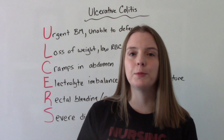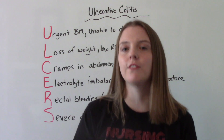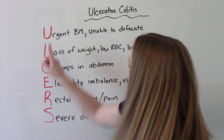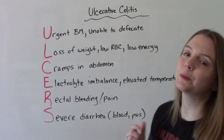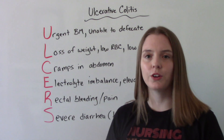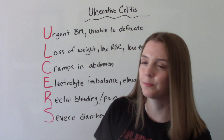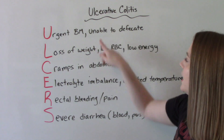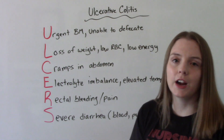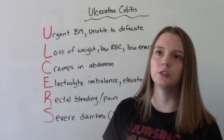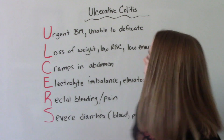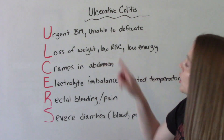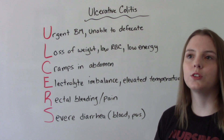A mnemonic device to help you remember the signs and symptoms of ulcerative colitis is ULCERS. U is urgent bowel movements — when you feel like you have to go, you have to go right away — and sometimes the inability to defecate. L is weight loss and low red blood cell counts, meaning anemia.